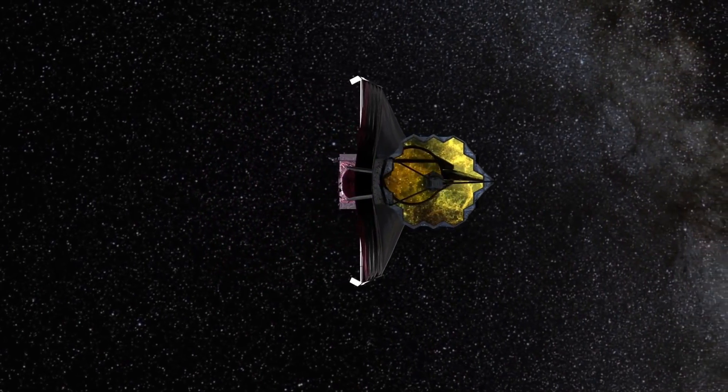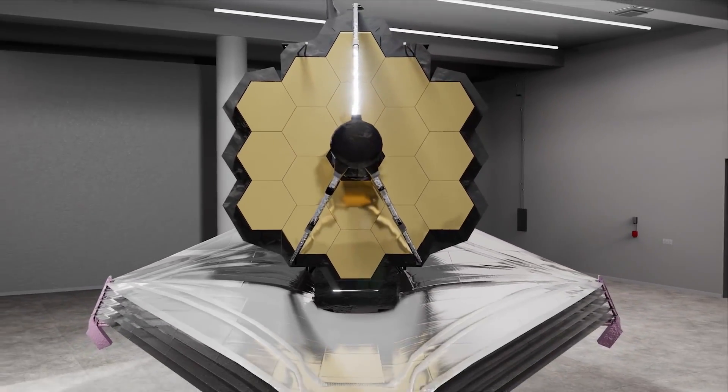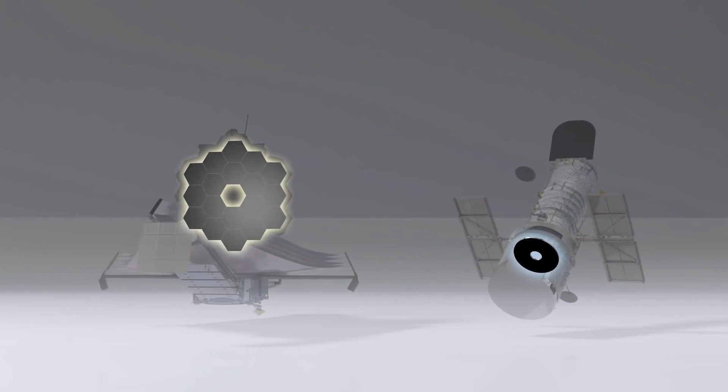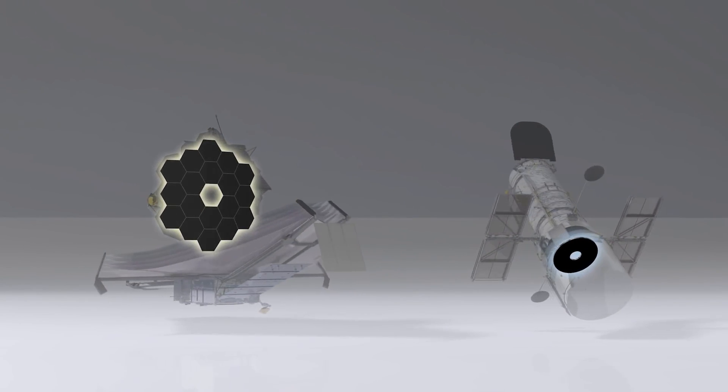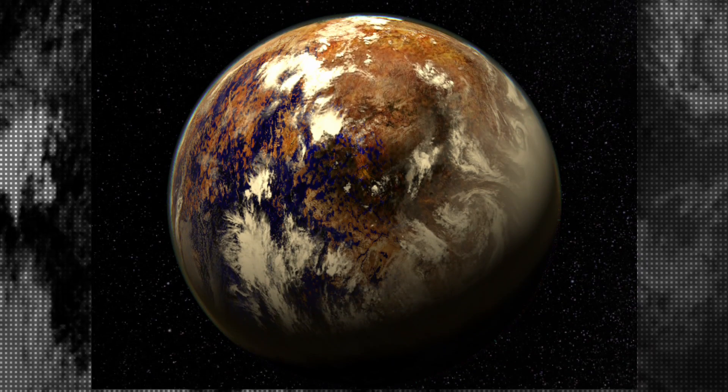It's equipped with a suite of scientific instruments that will enable astronomers to study exoplanets in unprecedented detail. The near infrared camera, or the NIRCam, is one of these instruments, and it's used to detect the light emitted by Proxima b.